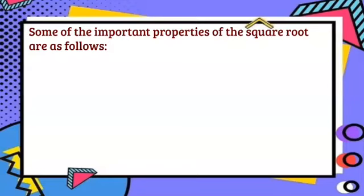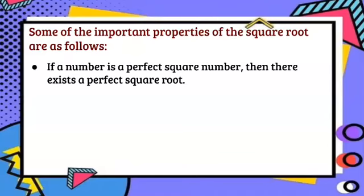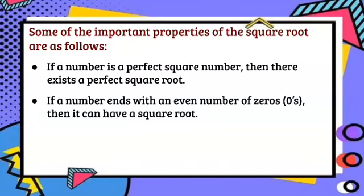Now some of the important properties of the square root are as follows. If a number is a perfect square number, then there exists a perfect square root, just like we saw with the square root of 25 which was 5, square root of 49 which was 7, square root of 36 which was 6. Another property: if a number ends with an even number of zeros, then it can have a square root.